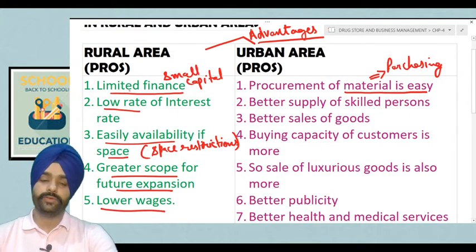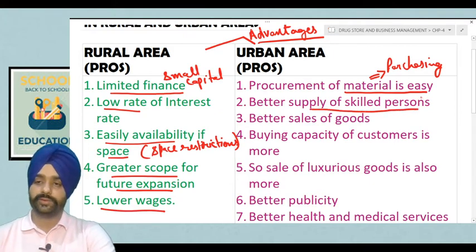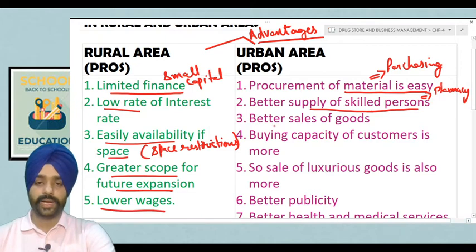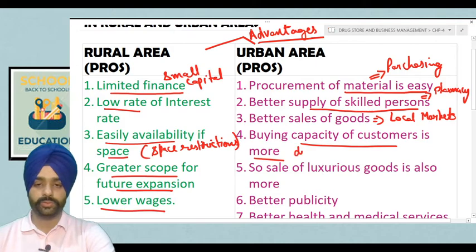In case of urban areas, procurement of material is easy. The next advantage is a better supply of skilled persons — persons with knowledge of pharmacy — who are easily available. There is also better sales of goods due to local markets, as many urban areas have local markets. The buying capacity of customers is more in urban areas due to higher income sources.